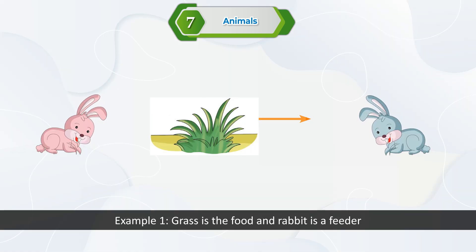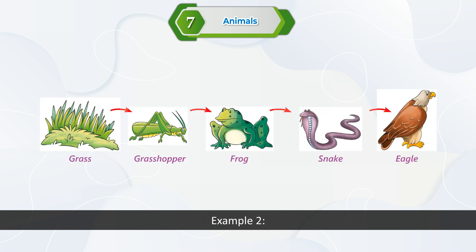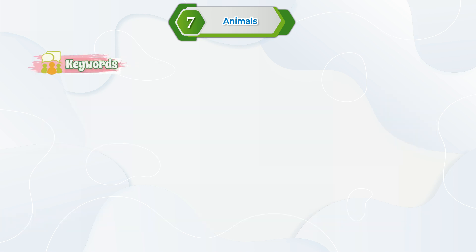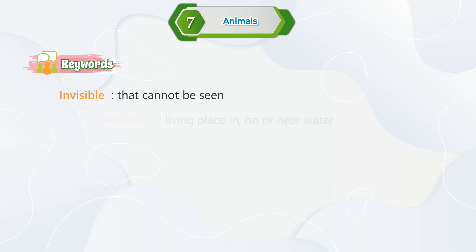Example 1: Grass is the food and rabbit is the feeder. Example 2: Grass → Grasshopper → Frog → Snake → Eagle.